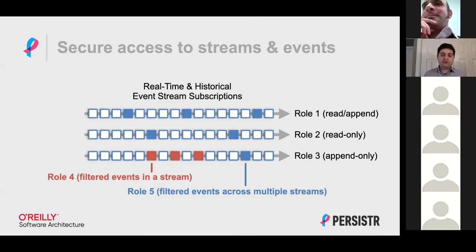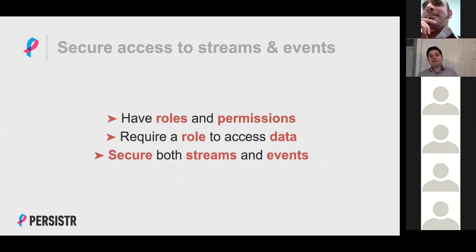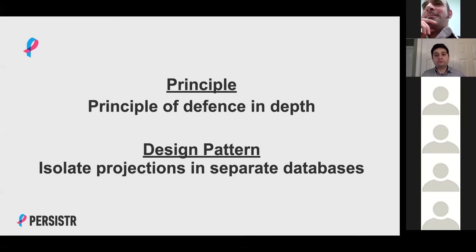A lot of people skip over this and implement the event stream and are happy when it works, but they don't consider security at all. So my recommendation: have roles and permissions, require a role to access data. If a role is not provided, refuse to provide any kind of access. Require a role to be provided and have the ability to secure both streams and events in whatever broker you're building. There was a question from Eric: is it possible to redact or delete sensitive information given this set of five roles? I actually have that as one of my design patterns — it's a pretty cool pattern. I'll get to that in a moment.